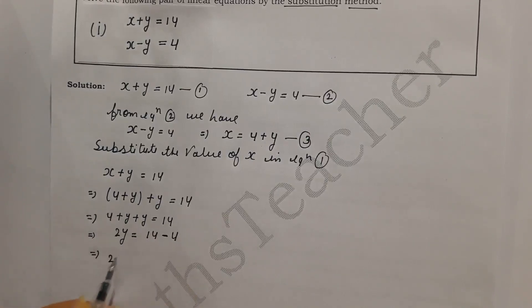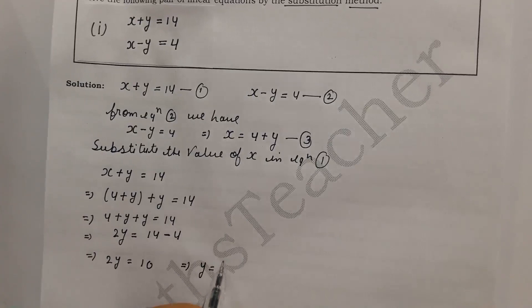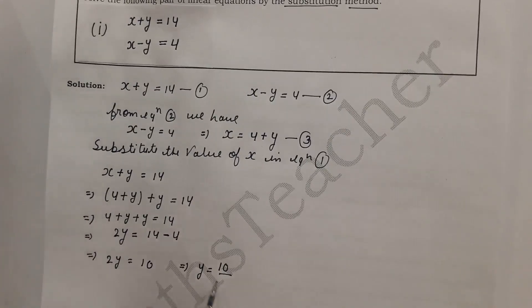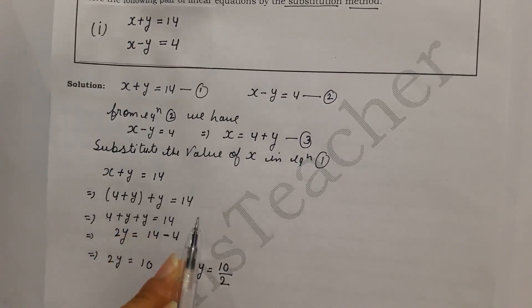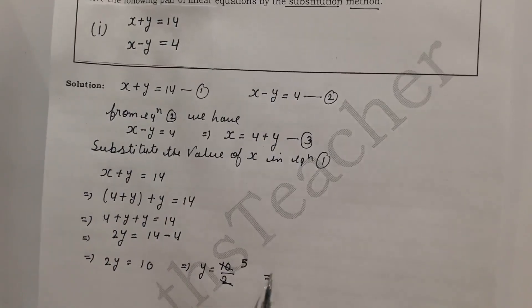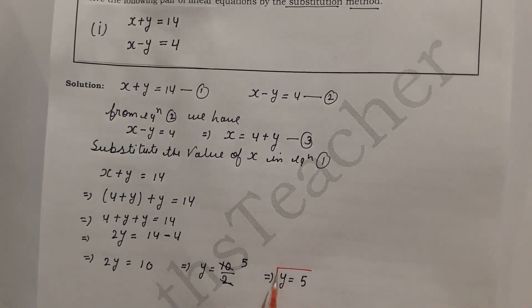This implies 2y equals 14 minus 4, which is 10. So y equals 10 divided by 2, which gives y equals 5.